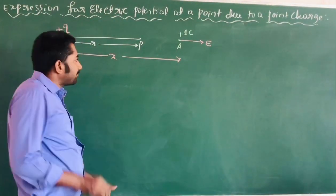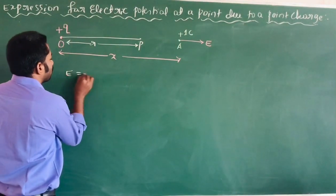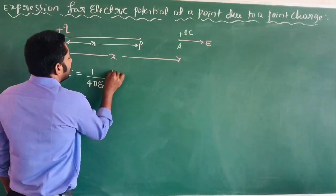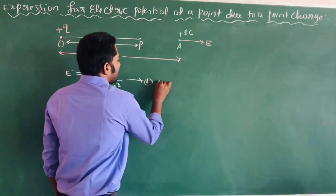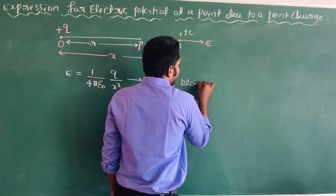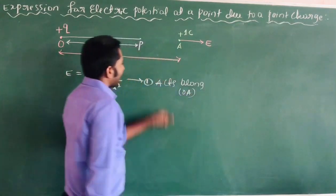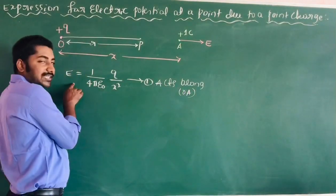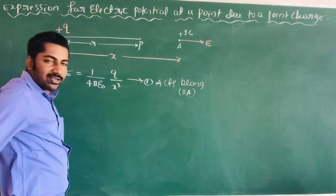We know the formula: the electric field at point A is E = 1/(4πε₀) × Q/X², along OA in this direction. This is equation number 1.